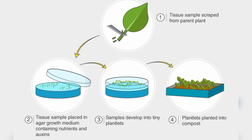Marker-assisted selection is using DNA markers, biochemical markers, or morphological markers to identify a particular trait in a plant.